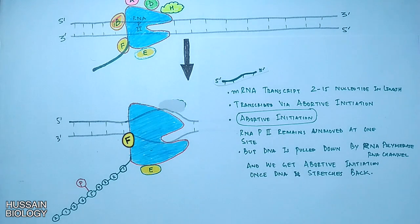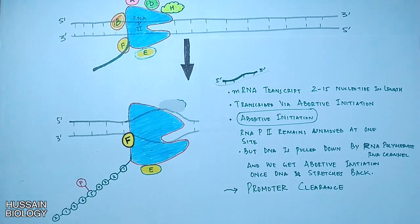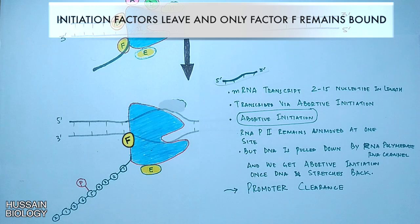After that elongation factors start to bind once we get the serine 5 phosphorylation. So it's from here where the elongation begins. When the elongation begins the initiation factors start to leave and only transcription factor F remains bound till the end.